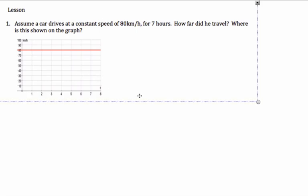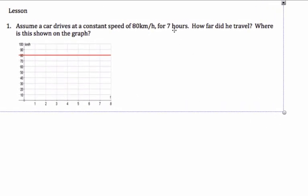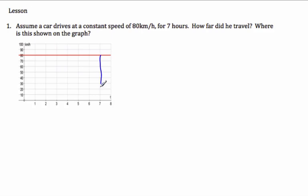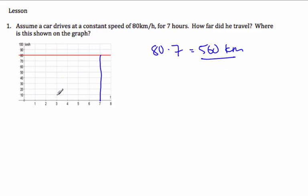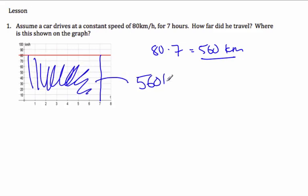Assume a car drives at a constant speed of 80 kilometers per hour for 7 hours. How far did it travel? Here's my 80 kilometers per hour, and it traveled for 7 hours. To find the distance, I multiply these two: 80 times 7 equals 560 kilometers. So where do I find 560 kilometers? If this is 7 and this is 80, this area here is 560 kilometers.